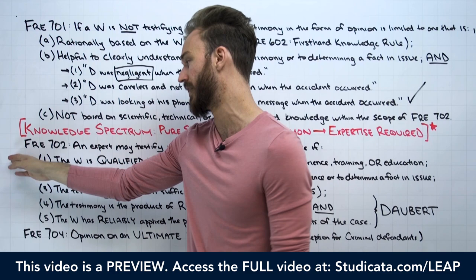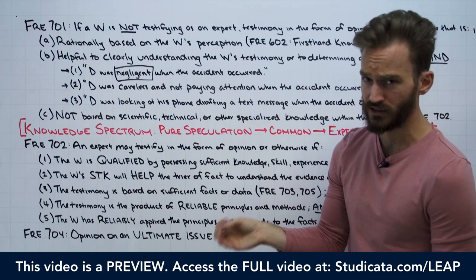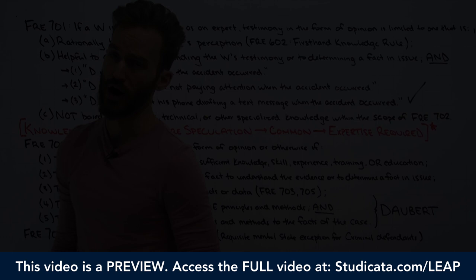So we can just skip the 701 analysis when expertise is required. Under Rule 702, an expert may testify in the form of opinion or otherwise if five requirements are met.